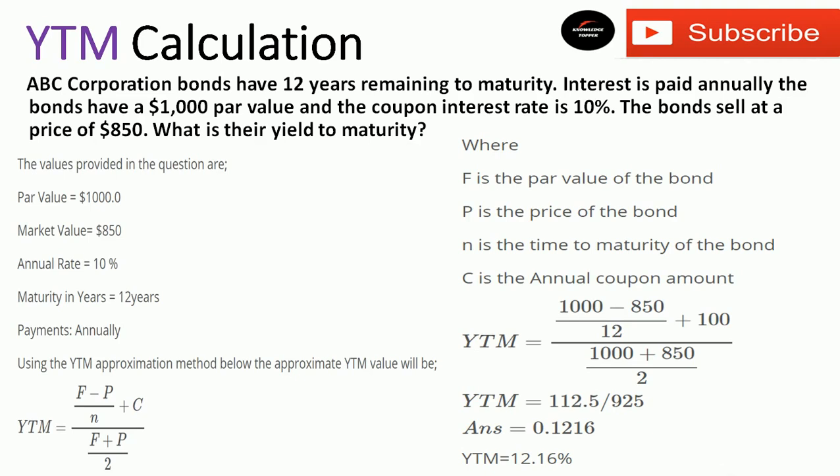In this example, the bond's par value is $1,000 and the selling price is $850, so this bond is trading at a discount. The maturity is 12 years. Extracting the values: par value (F) = $1,000; market value or price (P) = $850; coupon rate = 10% paid annually; number of years to maturity (N) = 12.